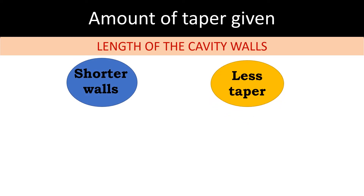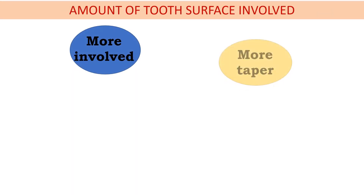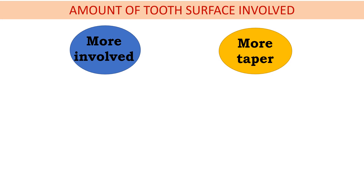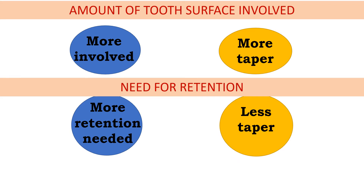The amount of taper given — these factors form important multiple choice questions. First, the length of the cavity walls: shorter the wall, less is the taper, approaching parallelism; longer the wall, more is the taper. However, the taper should not exceed 10 degrees. Second, the amount of tooth surface involved: more is the tooth surface involved, more is the taper, again not exceeding 10 degrees. More complex the cavity preparation, greater the surface contact, hence higher friction — so taper is increased to allow easy removal of impression material. Third, the need for retention: greater the requirement for retention, less is the taper. The taper should always be given equally in both walls — never give unequal taper.